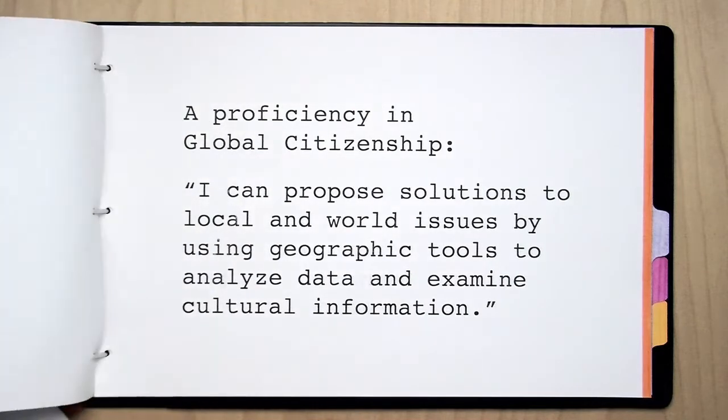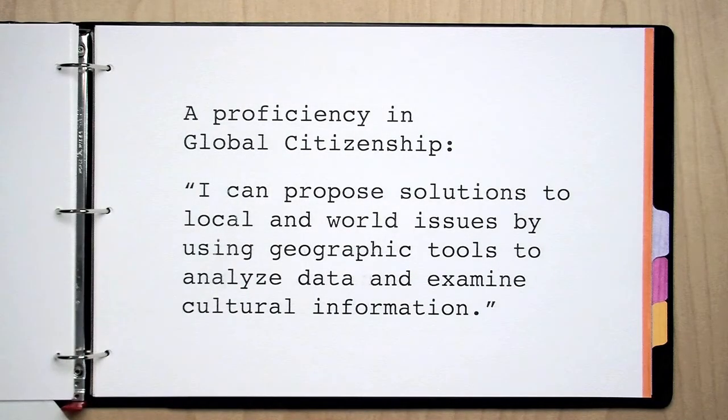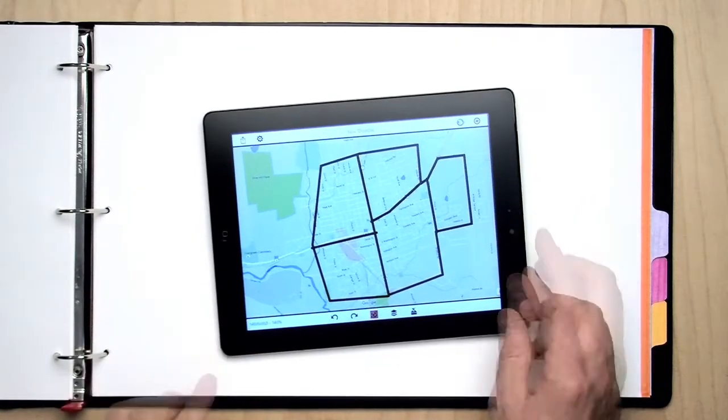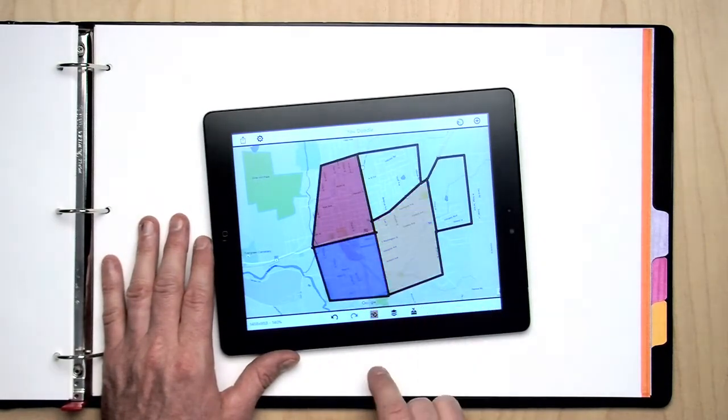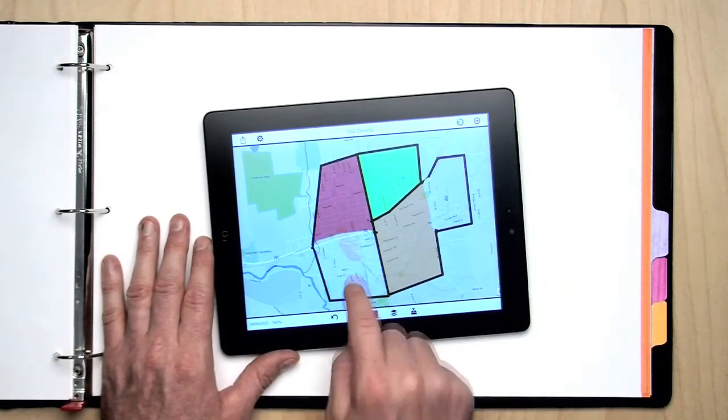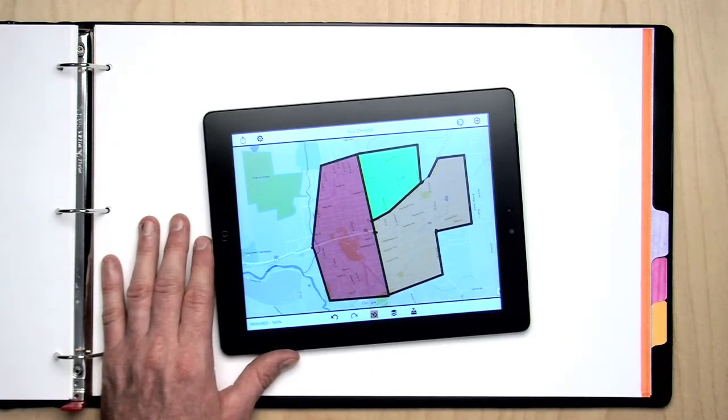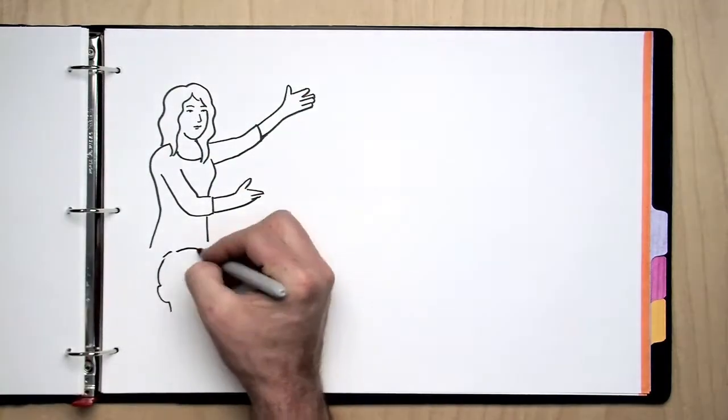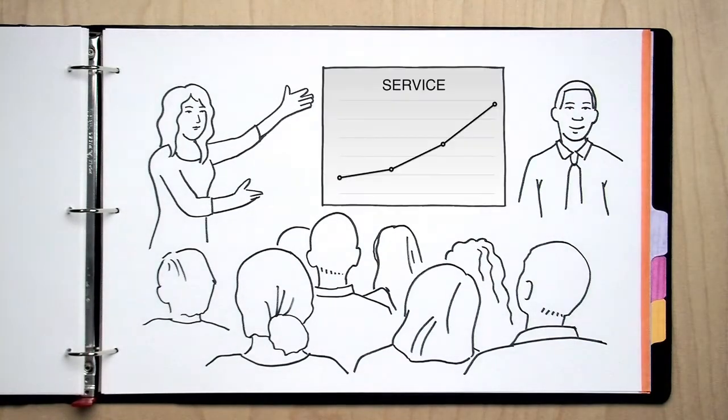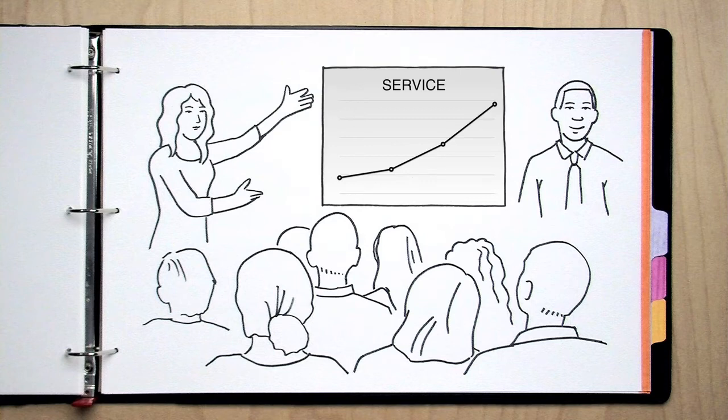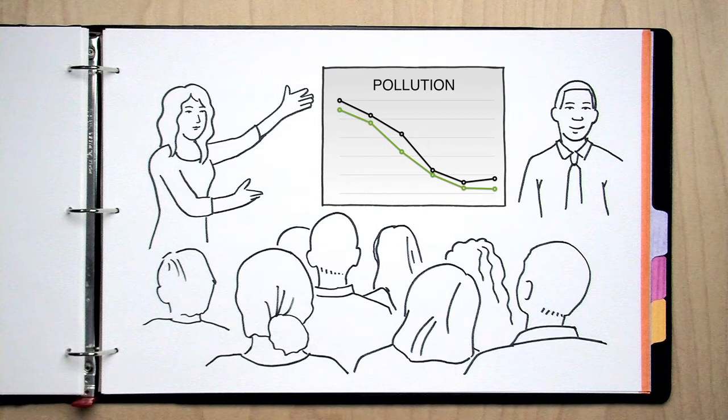Here is an example of a proficiency in global citizenship. It reads, I can propose solutions to local and world issues by using geographic tools to analyze data and examine cultural information. It's cool that it's written that way because it's really specific about what I need to learn. Figuring out how to use geographic tools and data to explore an issue in my town or the world that interests me. Maybe something like using GIS neighborhood information to coordinate recycling pickups so there are less trucks on the road. Then I can demonstrate my learning by presenting at a community meeting on how to reduce pollution. What I'm learning is clear, relevant, meaningful, and I have more say in how I get there.